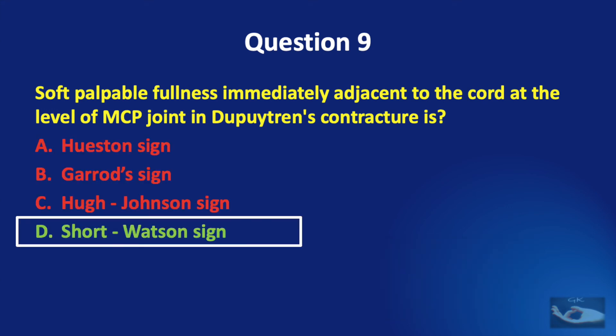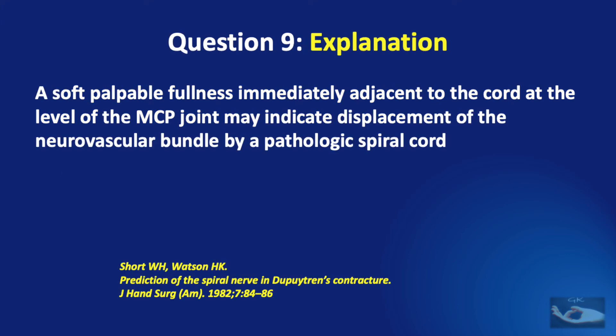The correct answer is the Short-Watson sign. A soft, palpable fullness immediately adjacent to the cord at the level of the metacarpophalangeal joint may indicate displacement of the neurovascular bundle by a pathologic spiral cord. This is known as the Short-Watson sign.